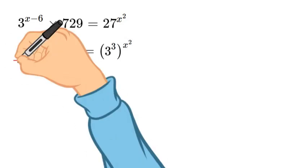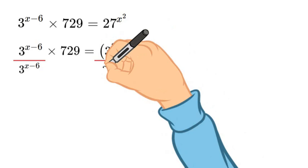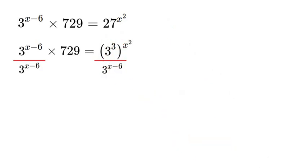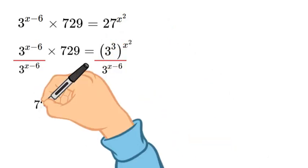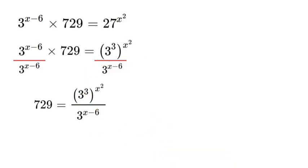Alright the next step is we're going to divide by 3 to the power of x minus 6 on both sides. That way we can get our 729 by itself and that'll look like this.